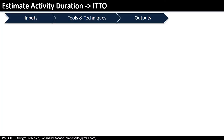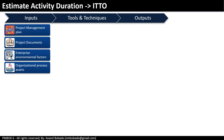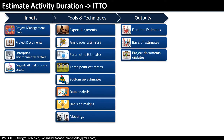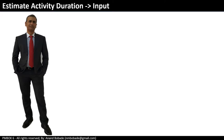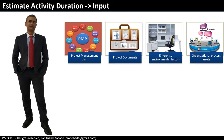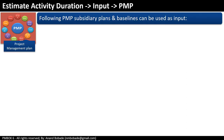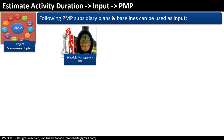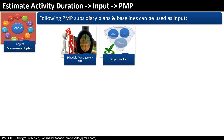The ITTOs for this process are as follows. Inputs include project management plan, project documents, enterprise environmental factors, and organizational process assets. From the project management plan, the relevant components are the schedule management plan, which provides guidelines for estimating activity duration, and the scope baseline.